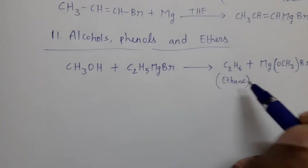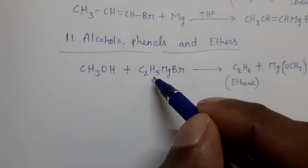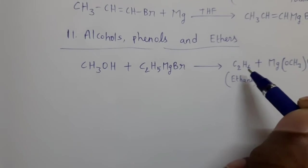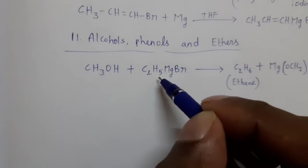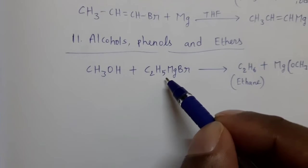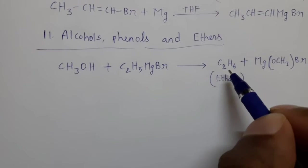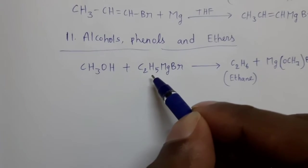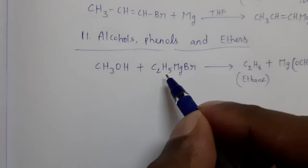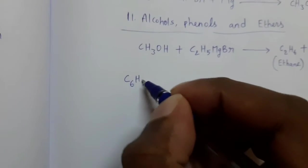The alkane formed corresponds to the alkyl group of the Grignard reagent. Whichever alkyl group is present in the Grignard reagent, it is converted to the corresponding alkane. So if C₂H₅ is present, we get C₂H₆ (ethane). If CH₃ is present, we get CH₄ (methane). If a propyl group is present, we get propane.